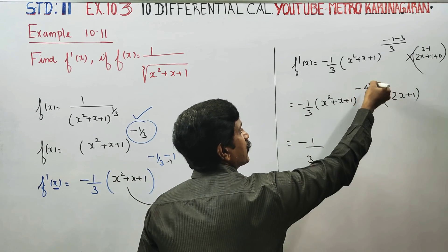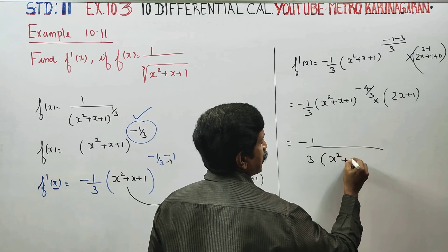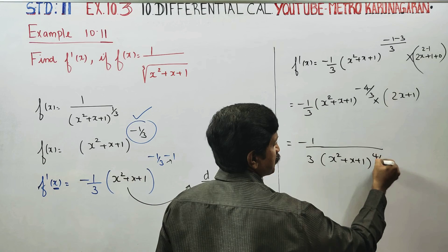Minus 1 by 3, power will be positive, x square plus x plus 1, over power plus 4 by 3.